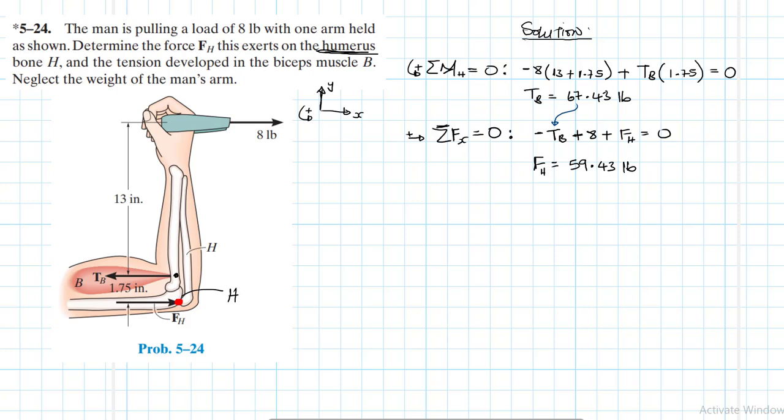So I think we are done. We were asked to find FH of course which we found, but we found both of them. We have TB equal to 67.43 and we have FH and this is equal to 59.43.